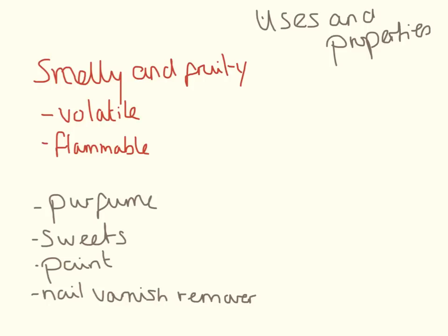Esters have some really nice uses and properties. The two main properties that make them useful are that they are smelly and fruity. The smelliness comes from their volatility — they evaporate really easily, which makes them easy to smell, but it also means they are very flammable. Because they are so volatile, they are used in perfumes, sweets (pear drops are all due to esters), paint, and nail varnish remover.